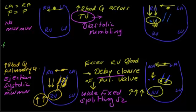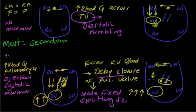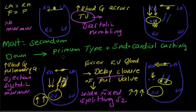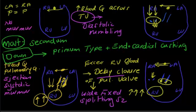Last but not least, the most common type of atrial septal defect is the secundum type. However, in case of Down syndrome, the primum type is more common — specifically the ostium primum type, usually associated with endocardial cushion defect. So Down syndrome patients most commonly have the primum type, but overall the most common type of ASD is the secundum type.